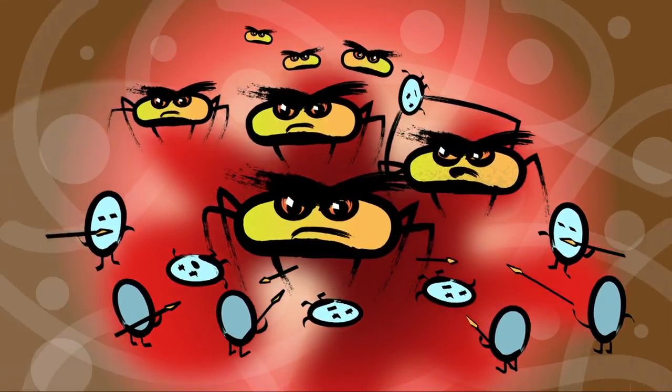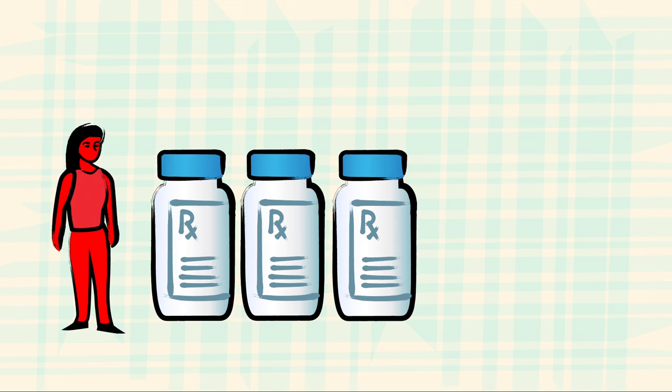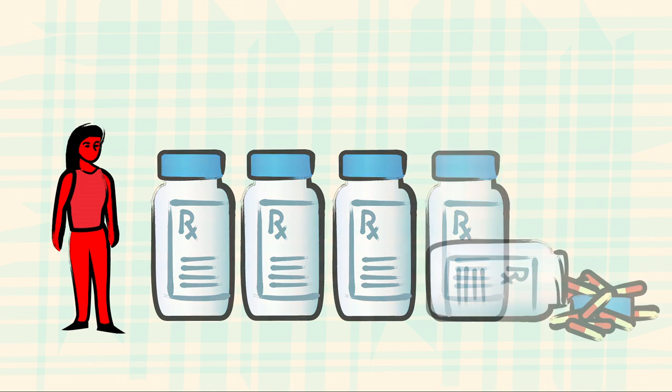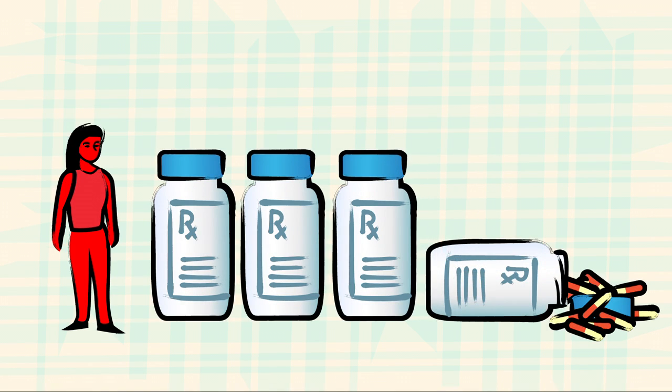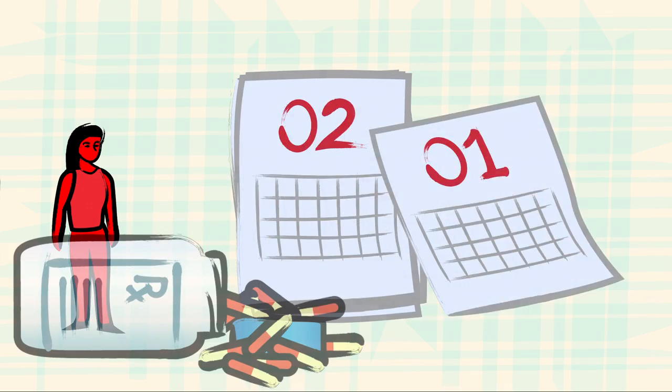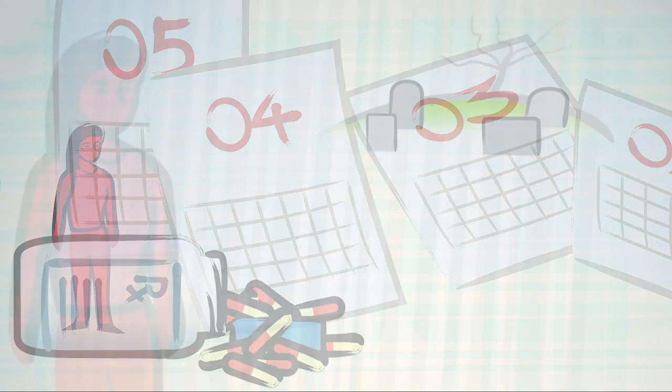TB disease is very serious. A person who is sick with TB must take four kinds of medicine or more for many months. The sick person is often isolated from family and cannot go to work.